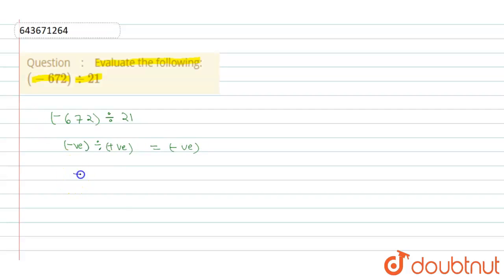So we can write it as minus 672 divided by 21. Clear. Now we will divide 672 by 21. Clear.